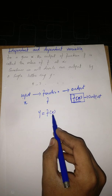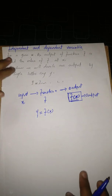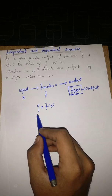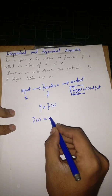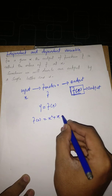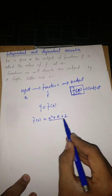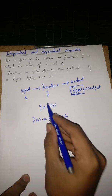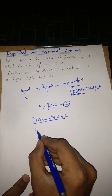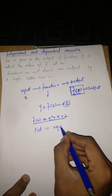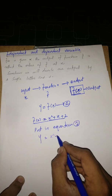To understand which is dependent and which is independent, let's take an example. Suppose F of X is equal to X squared plus X plus 2. This is an expression in the variable X. When we put this value of F of X in the equation, Y becomes X squared plus X plus 2.